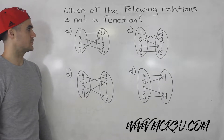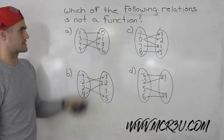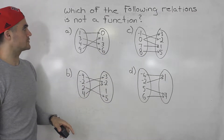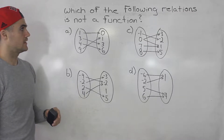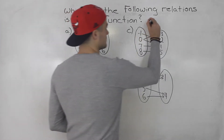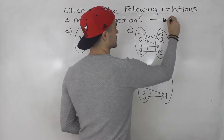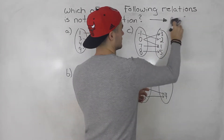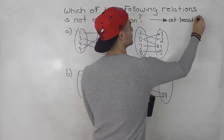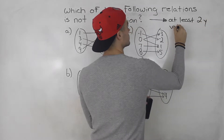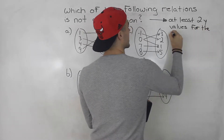Welcome back everybody. In this question we are given a set of four relations as mapping diagrams and we have to state which of these relations is not a function. Now if something is not a function, as a review, what that means is that there's going to be at least two y values for the same x value.